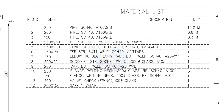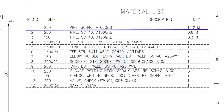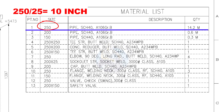Let us start with the material list. Part number 1: pipe nominal size is 250. If you want to convert this into inches, divide it by 25 and you will get the nominal pipe size in inches. What is the nominal pipe size of this 250 NB pipe in inches? Divide 250 by 25. The answer is 10 inches.